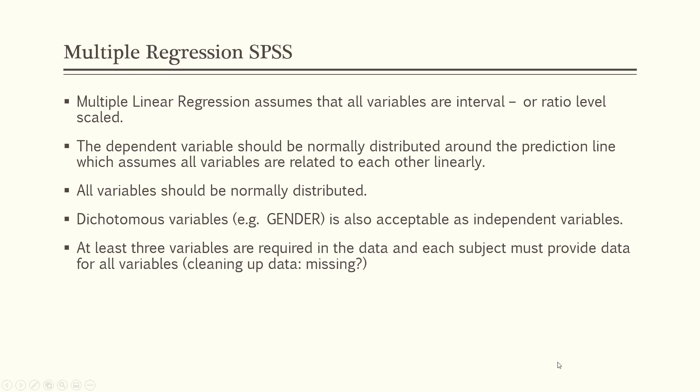Multiple linear regression assumes that all variables are interval or ratio level scaled. However, you can use dichotomous variables as independent variables — meaning two categories — so in our example we'll use gender as an acceptable independent variable. All variables should really be interval or ratio level unless you use a dichotomous independent variable. The dependent variable should be normally distributed around the prediction line; you'll run scatter plots to determine this. All variables should be normally distributed. If any of these assumptions are violated, your regression analysis may not be accurate.